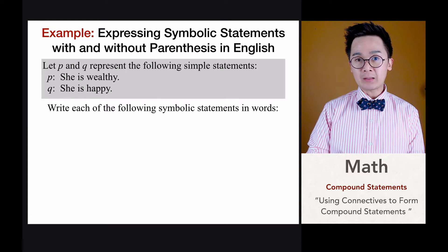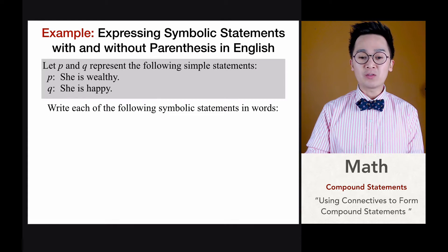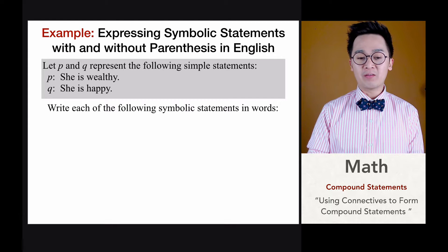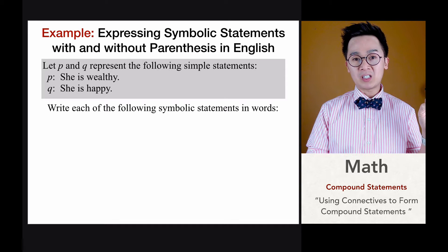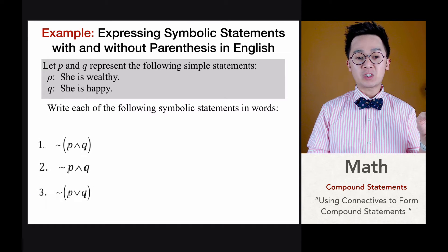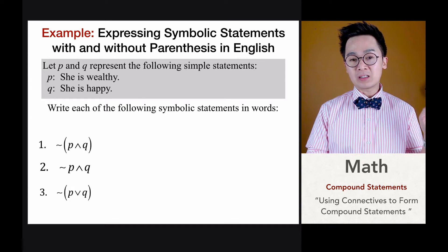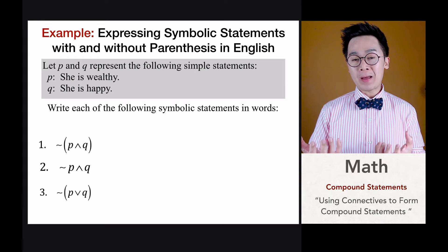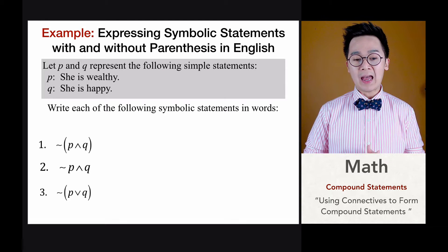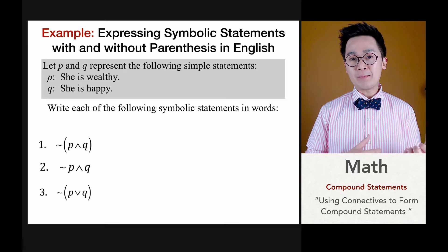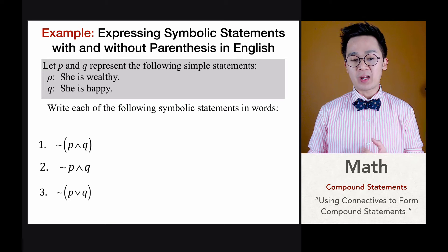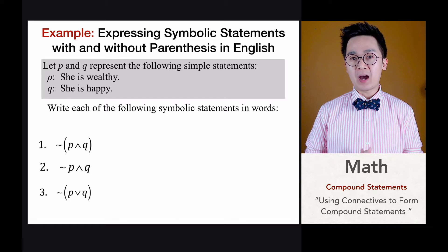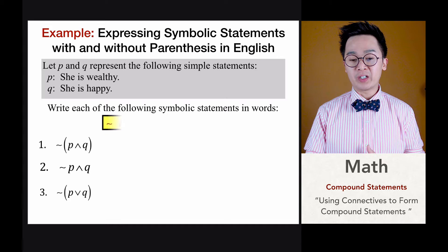Let's say we have two statements to translate into symbolic form and vice versa. In this particular example, we have two statements: statement P, which is 'she is wealthy,' and Q, 'she is happy.' We're going to use these two statements to compose compound statements, incorporating the operations we've learned.